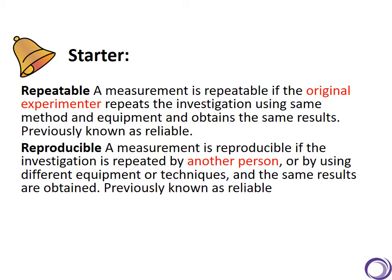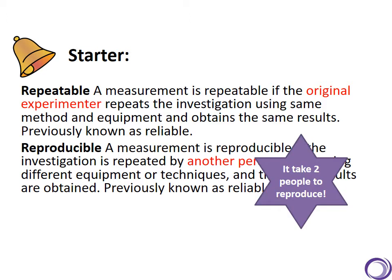Reproducible differs in that the experiment is repeated by another person, somebody different, but they still get the same results. One way to remember this is that it takes two people to reproduce. So repeatable is when one person does it, but reproducible is when two or more people do it.